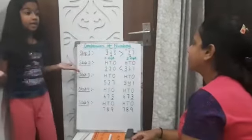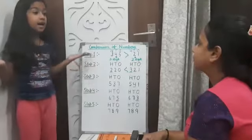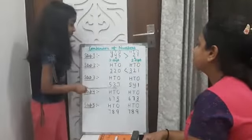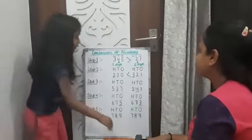Step three: If hundreds are the same, check the tens place. Bigger tens digit means bigger number.